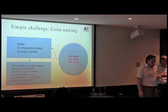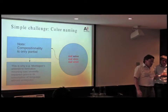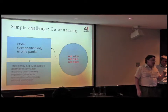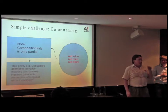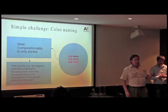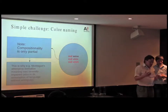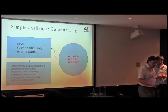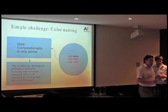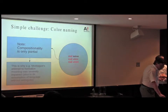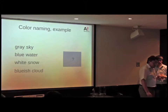For example, in color naming, compositionality is only partial. Quanticular grammar was a nice formal attempt to ground or create a theory of semantics, but I think it was severely impaired because of the very strong emphasis on compositionality, which is really only partial.